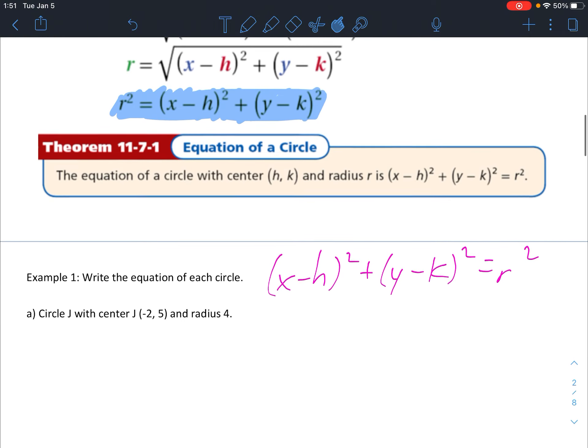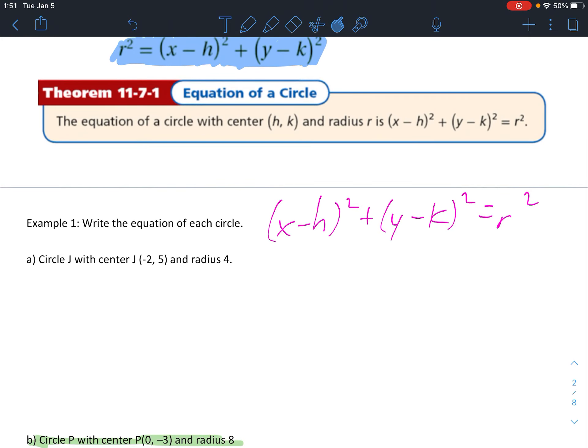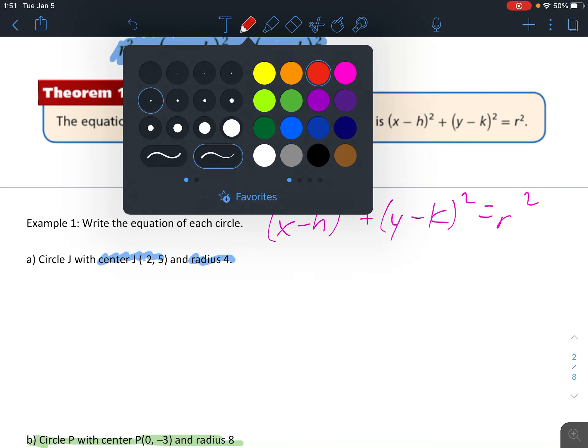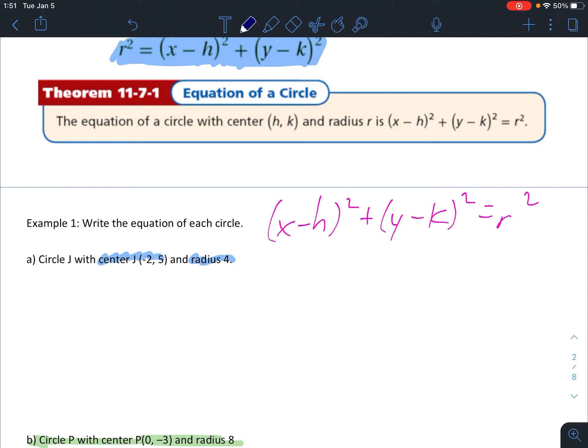Example one says write the equation of the circle. So we need two things, we need a center and we need a radius. Look what our problem gives us, a center and a radius. That's it, we're pretty much done. All we got to do is put our numbers in where they belong. So it's going to be x minus h squared plus y minus k squared equals radius squared. And that's pretty much it. All you got to do is clean that up a little bit, which gives us x plus 2 squared plus y minus 5 squared equals 16. And that is our equation of the circle.